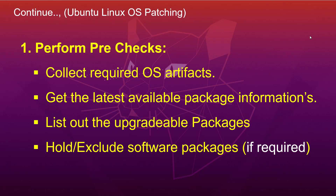The first step is to perform pre-checks. In this section we are going to perform the following actions: first, collect the OS pre-artifact; then get the latest available package information from the repository; and list out what packages we are going to upgrade during the patching. Also, exclude or hold any software package from the patching if required.